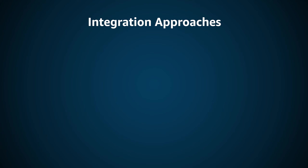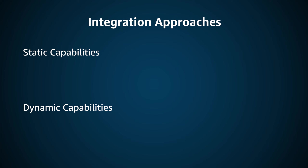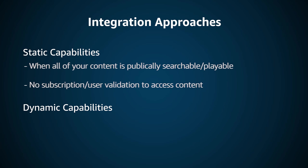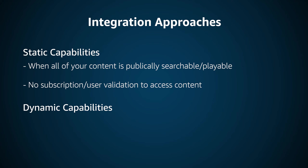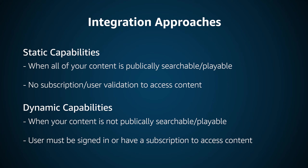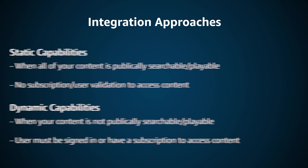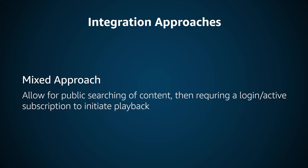Now let's quickly talk about the types of integration that you can choose from. When implementing VSK, you have the option of both static and dynamic approaches. Which approach you use will largely depend on how you want to handle voice capabilities — specifically whether the state of the user is relevant, such as being logged in or having an active subscription. Static capabilities are used when all of your content is searchable and playable for free, without the need for subscriptions or any kind of validation for the user's state. Dynamic capabilities are used when your content is not immediately searchable — this doesn't necessarily mean paid content, but could also include any content that the user should be logged in to view. You can also mix both approaches, giving you the option of allowing both static and dynamic capabilities, such as allowing users to browse content but only allowing playback if they're signed in or have an active subscription.